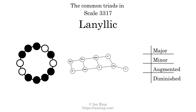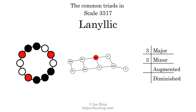Here are the common triads present in this scale. The diagram in the center is a graph of parsimonious voice leading between triads. There are three major triads, three minor triads, one augmented triad, and two diminished triads.